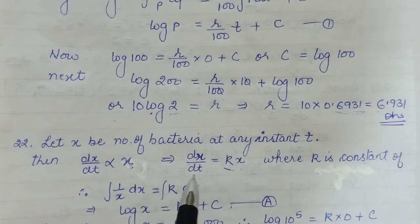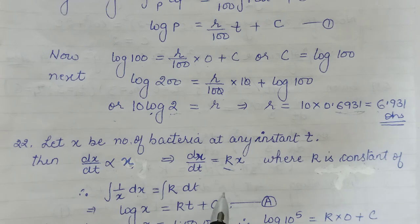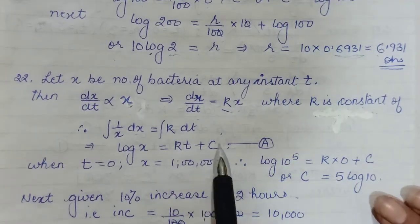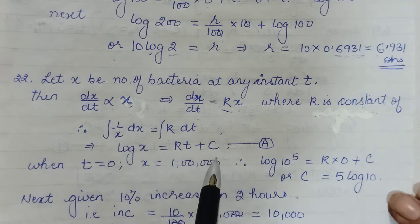Again we will separate the variable. So 1/x dx and k times dt, integrating log of x is once again equal to kt plus C. Now we will evaluate all these unknowns.